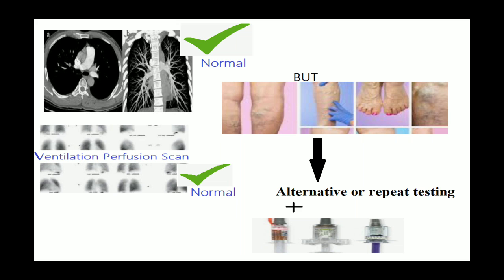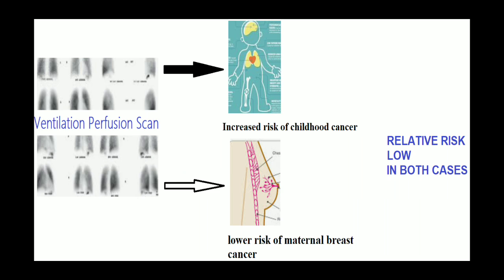Anticoagulant treatment should be continued until pulmonary embolism is definitely excluded — either by repeat testing or by starting anticoagulants. Women should be advised that compared with CTPA, VQ scan may carry a slightly increased risk of childhood cancer but is associated with a lower risk of maternal breast cancer. In both situations, the absolute risk is very small.